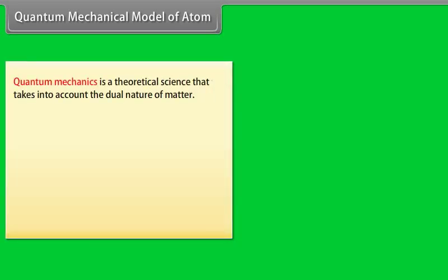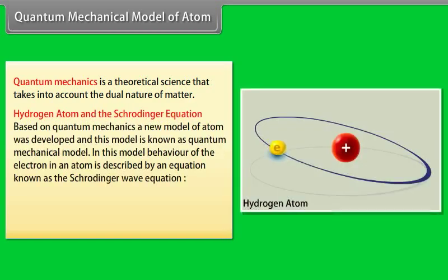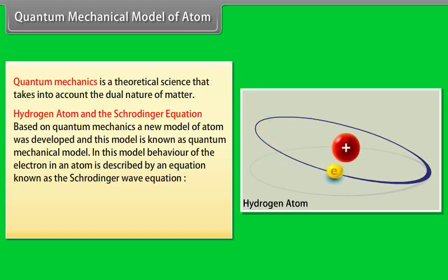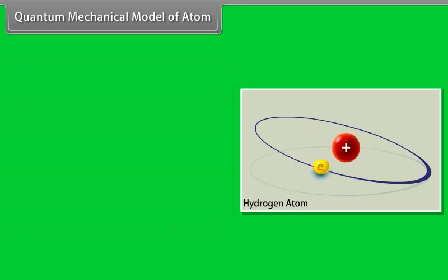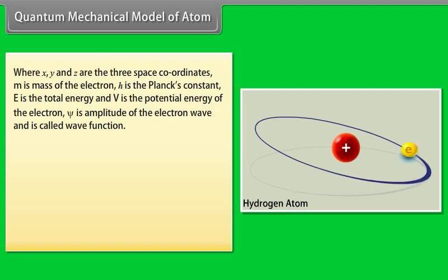Quantum Mechanical Model of the Atom: Quantum mechanics is a theoretical science that takes into account the dual nature of matter. Based on quantum mechanics, a new model of the atom was developed, known as the quantum mechanical model. In this model, the behavior of the electron in an atom is described by an equation known as the Schrödinger Wave Equation, where X, Y, and Z are the three space coordinates.